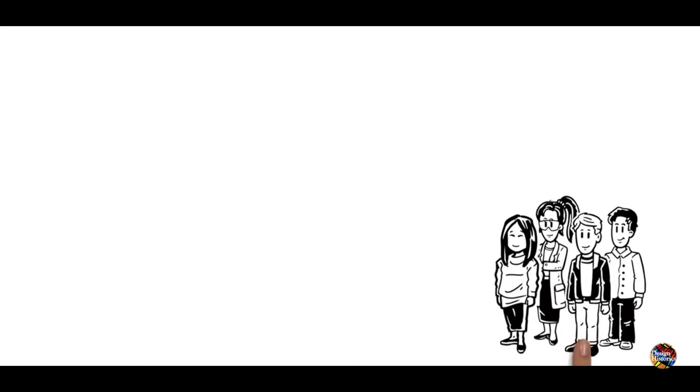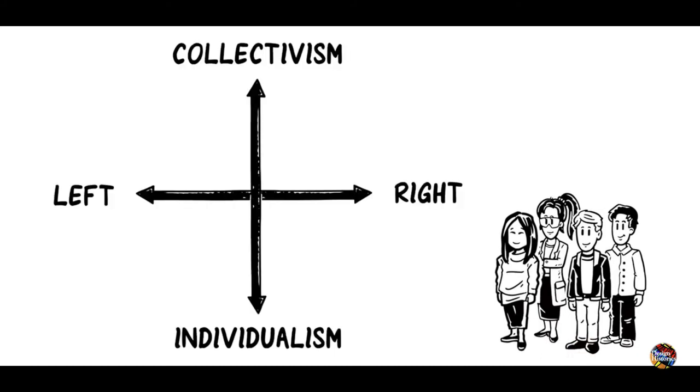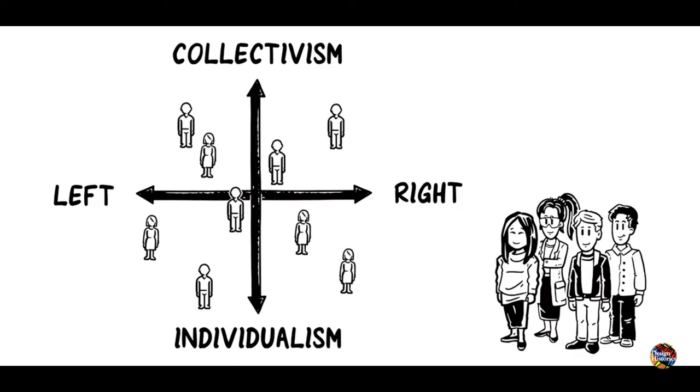Of course, most people's political opinions are not at any of the extremes of either the social or economic dimensions. This graph is a two-dimensional spectrum, which means that individuals can be positioned anywhere inside it.